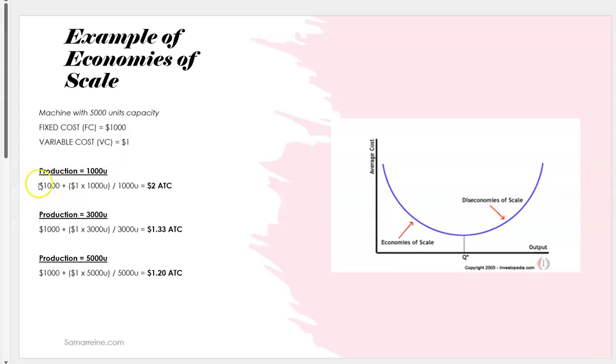At 1000 the fixed cost is a thousand, the variable cost is one dollar per unit and we're producing 1000 units. That's why it's one dollar times 1000 and we divide that by the number of units we're producing. So it's two thousand dollars divided by one thousand units. The average total cost which is the per unit cost is two dollars.